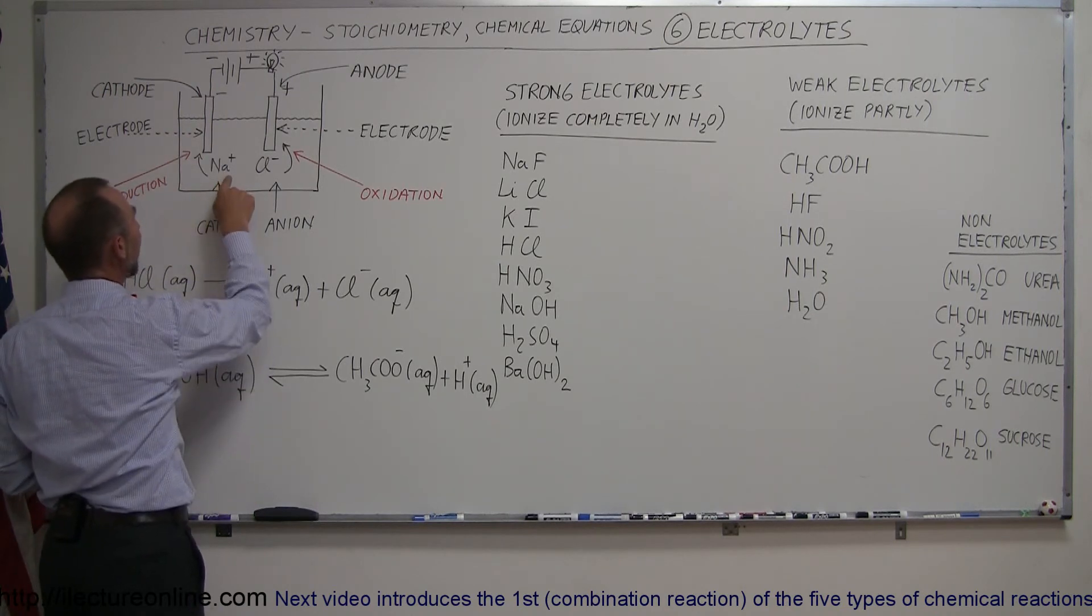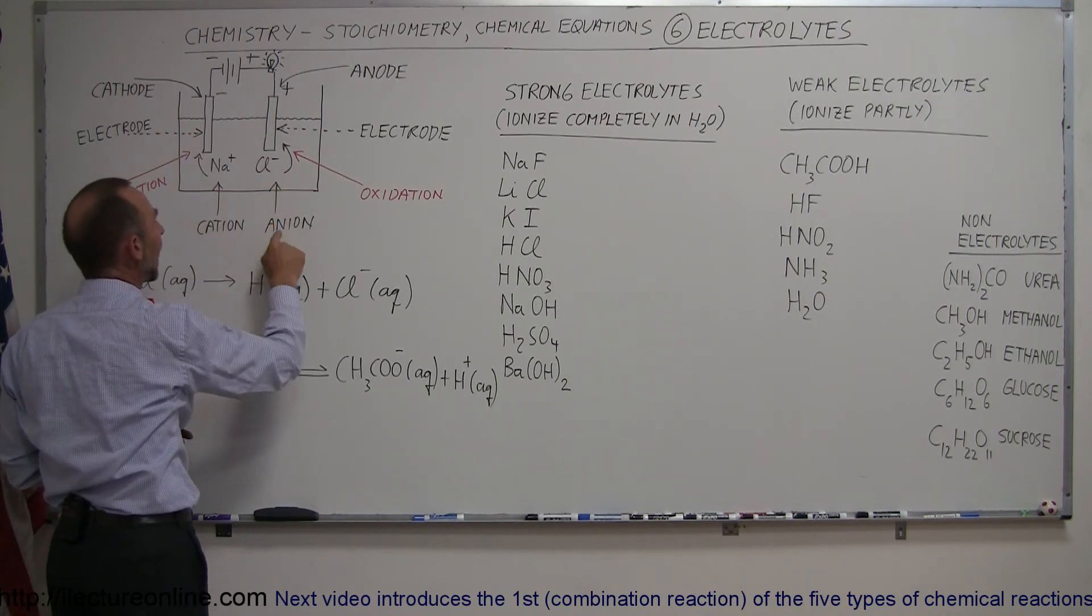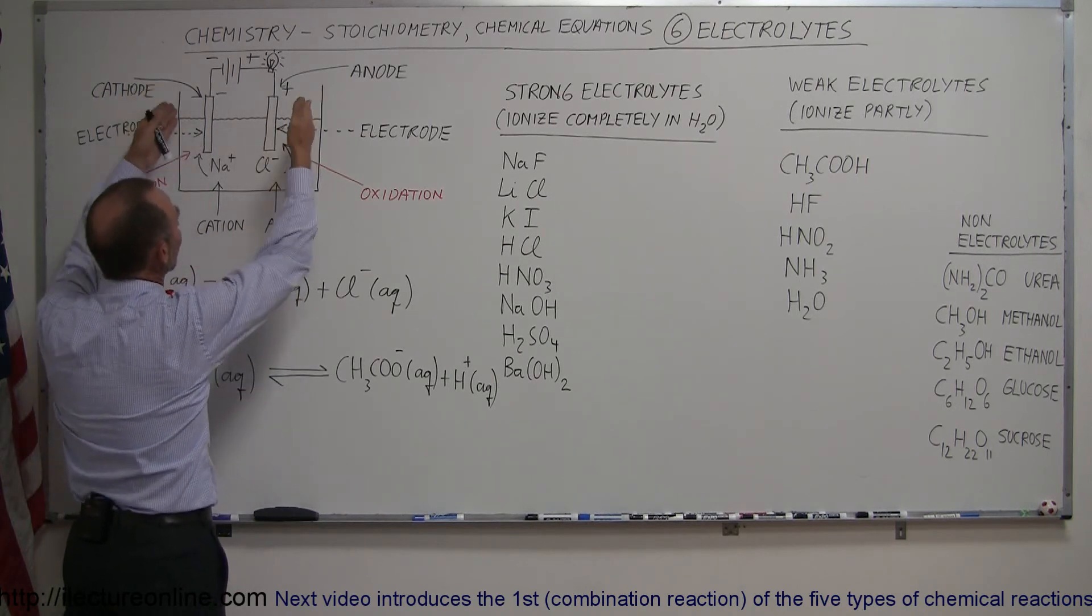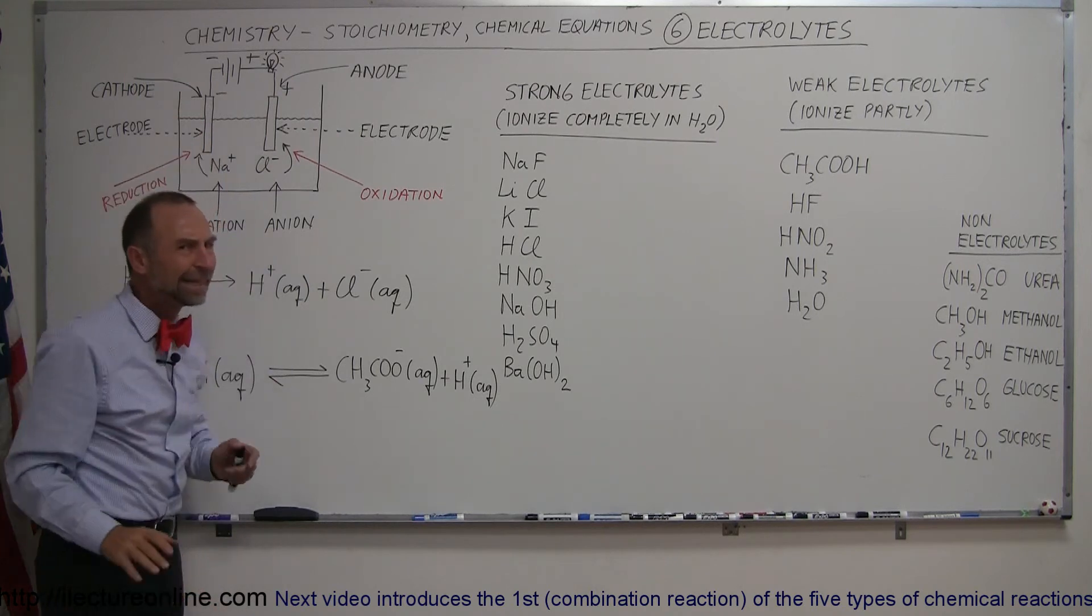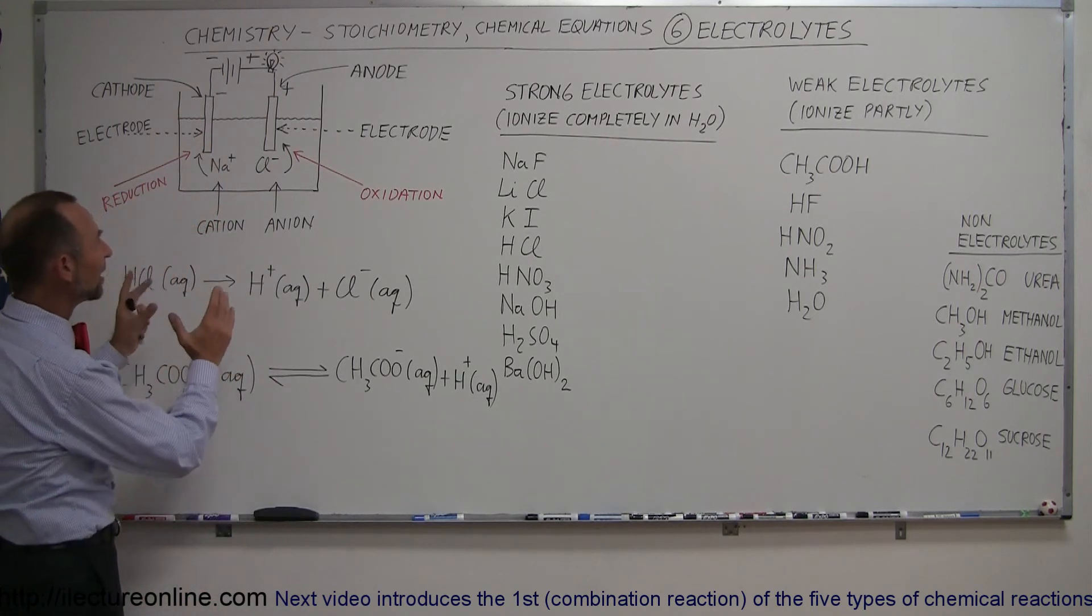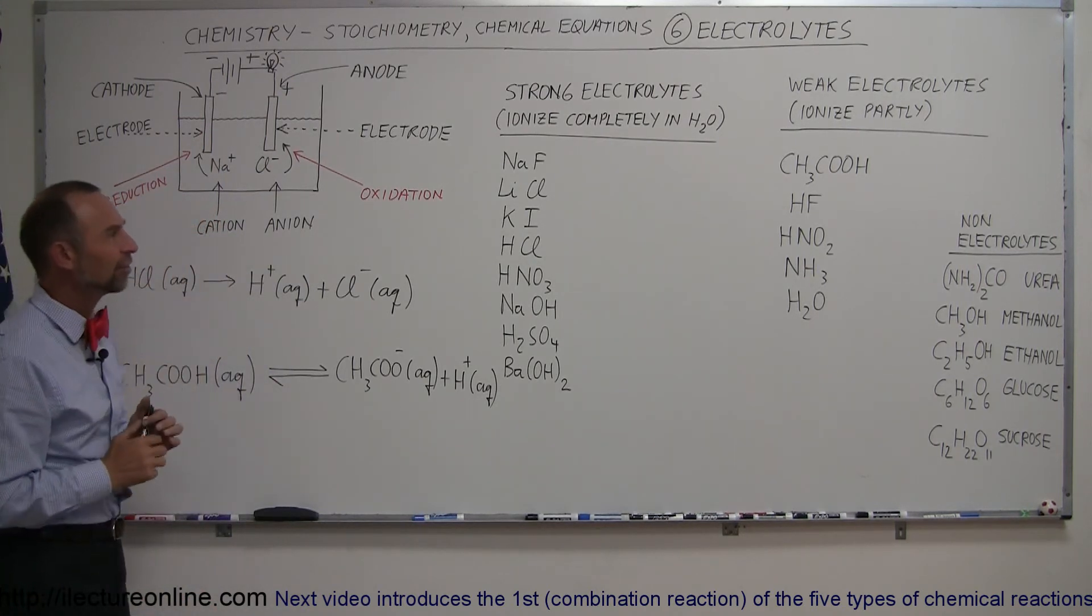So the positive ions are called cations, the negative ions are called anions, and the electrodes are associated with those names. Therefore, this is called the anode and this is called the cathode. Kind of confusing, but if you see the diagram, you keep track of that, then it's not too bad.